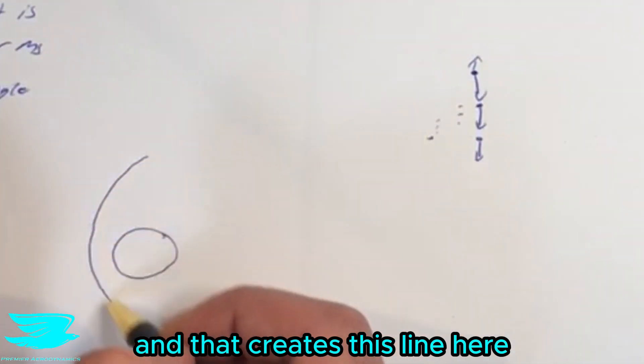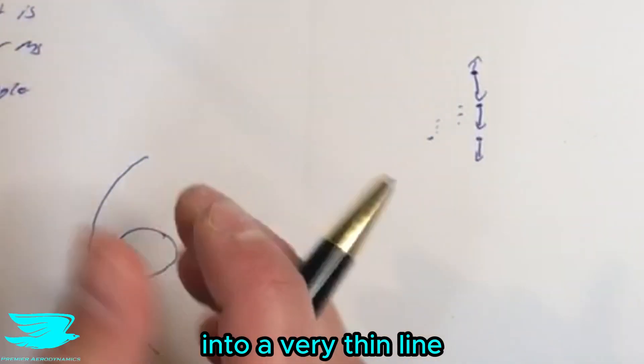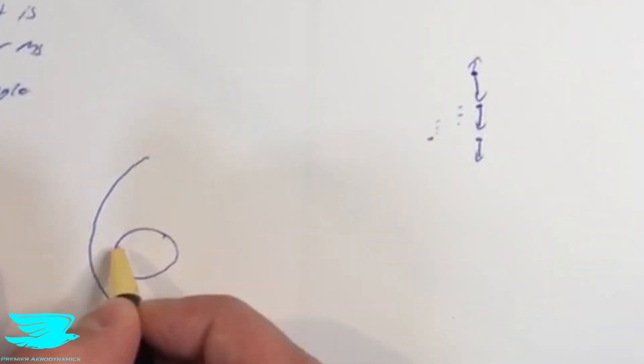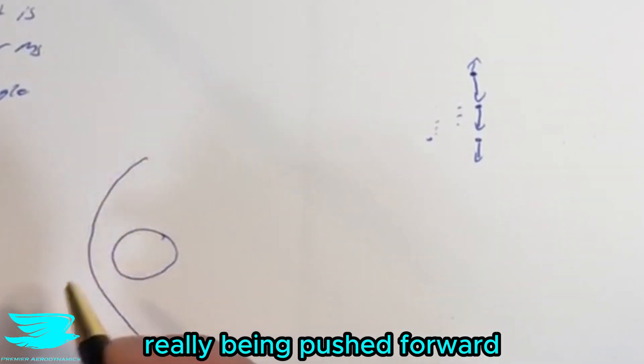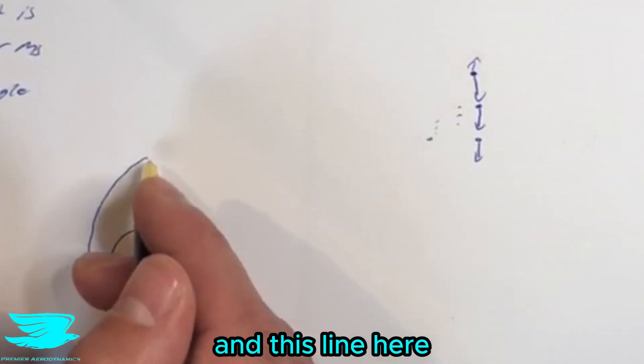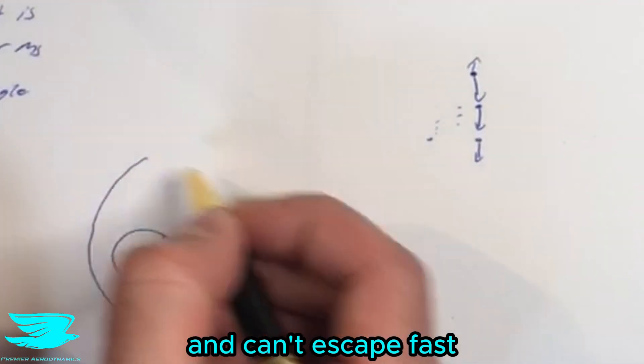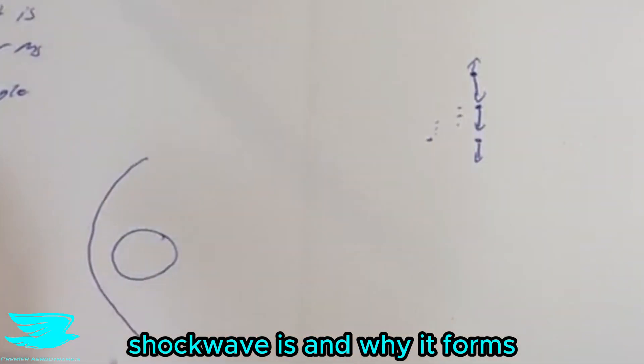And that creates this line here. This is literally all this air being compressed into a very thin line because the air in front of this shock, just around this region in front of this ball, is being pushed forward by this ball. The air out around here is not really being pushed forward and this line here is really the front of the air being pushed forward and it can't escape fast enough around this ball. So that is what a shock wave is and why it forms.